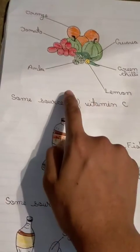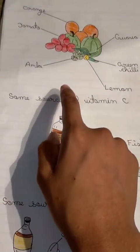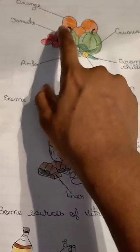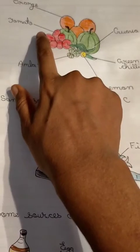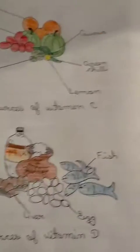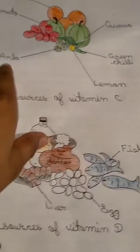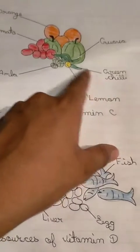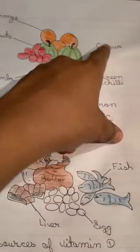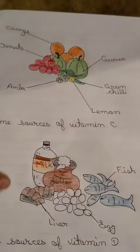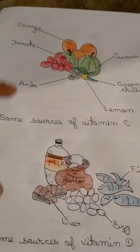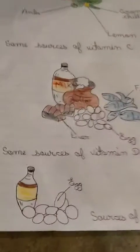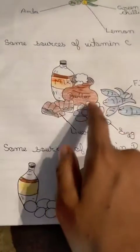Friends, these are some sources of Vitamin C. If our body gets orange (santra), tomato, amla, lemon (nimbu), green chili (hari mirch), and guava (amrood), we get Vitamin C.